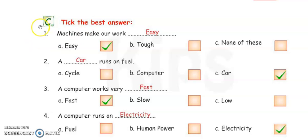Exercise C. Tick the best answer. Which answer is right? You have to tick here and fill in this blank also. First, machines make our work easy, tough, or none of these. Answer is easy. You have to tick here and write E-A-S-Y.